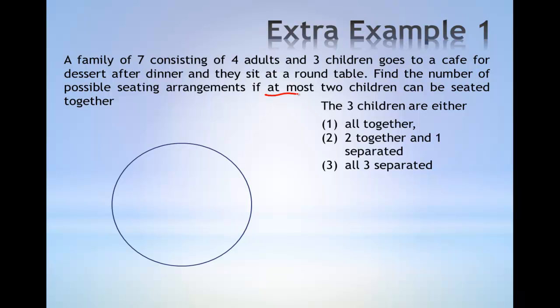The case where at most two children can be seated together is given by the combination of the second and third case. However, we will calculate the case where all three children are together and find its complement.